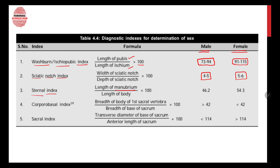If the sciatic notch index is between 5 to 6, then that is the body of a female. Next there is the sternal index, in which the length of the manubrium and the length of the body are divided and then multiplied by 100. If the body is of a male, we get a value of 46.2, and if it is of a female, we get 54.3.